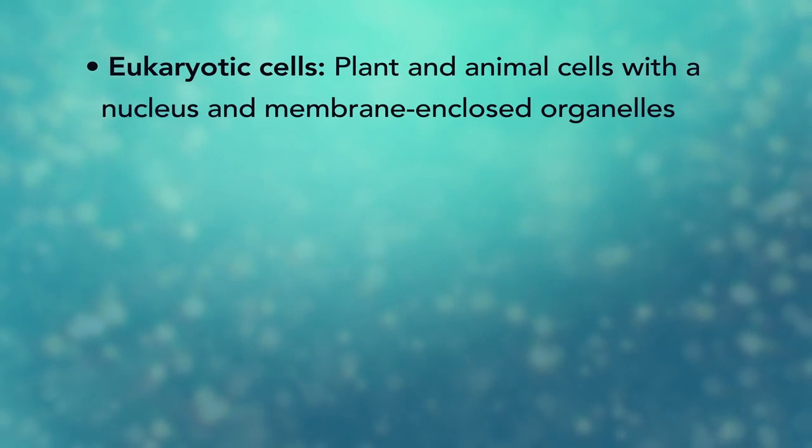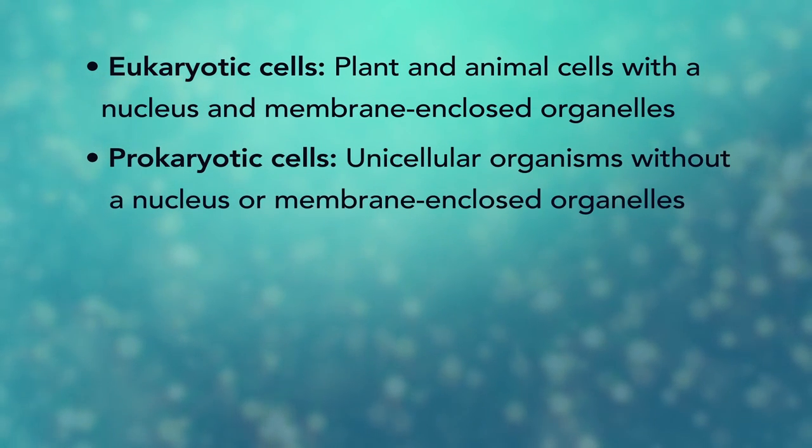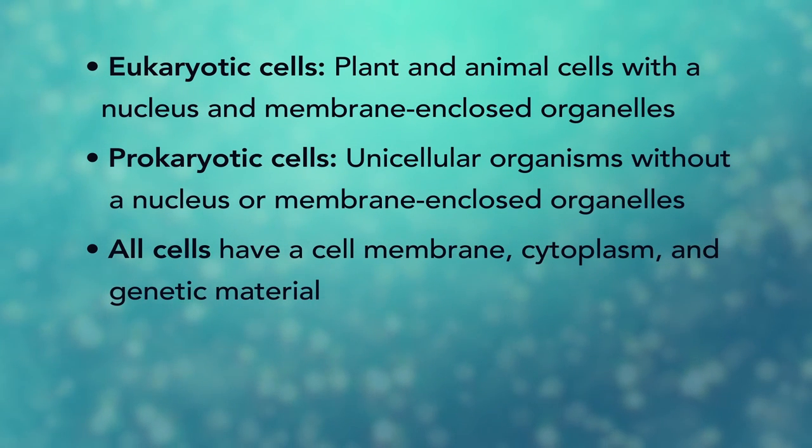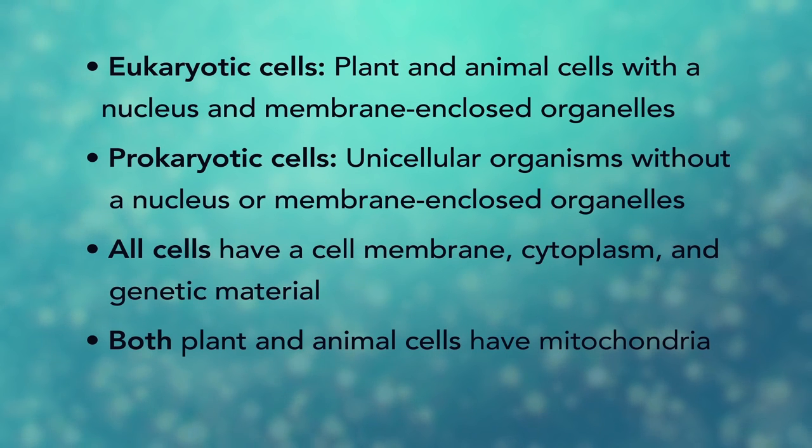In summary, remember, eukaryotic cells are plant and animal cells with a nucleus and membrane-enclosed organelles, while prokaryotic cells are unicellular organisms without these things. All cells have a cell membrane, cytoplasm, and genetic material. And even though only plant cells have chloroplasts, both plant and animal cells have mitochondria.